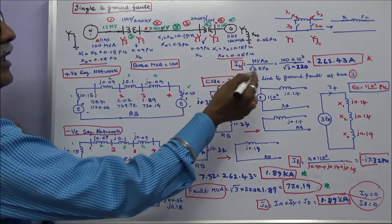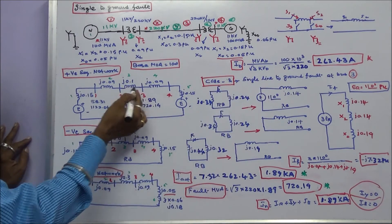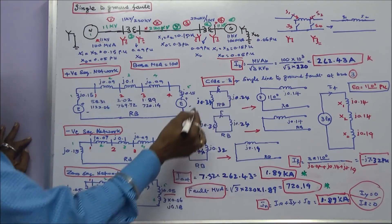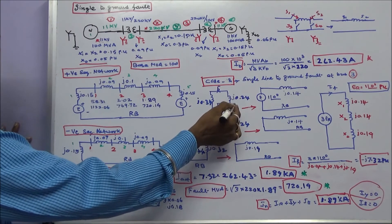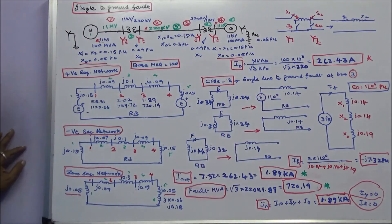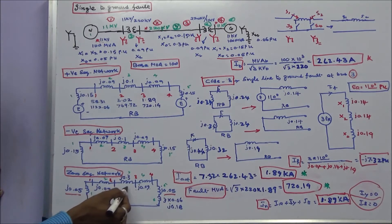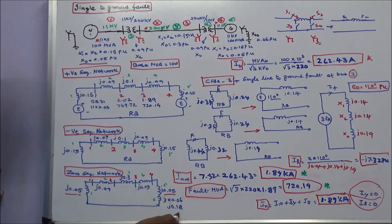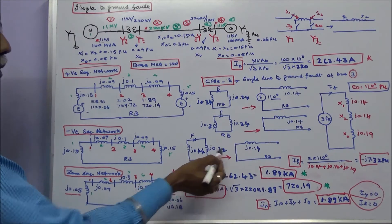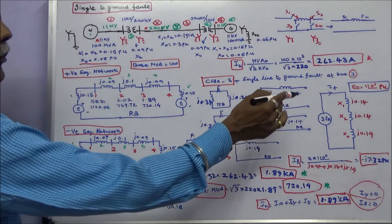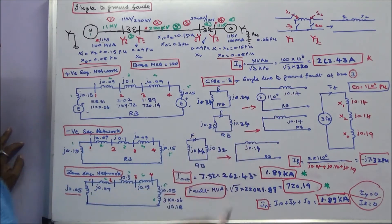Case 3: single line-to-ground fault at bus 3. One side total reactance is j0.34, other side is j0.24. These two are connected in parallel, giving X1 equals j0.14 and X2 equals j0.14. For zero sequence reactance: one path is j0.05 plus j0.1 plus j0.3, equaling j0.44. Another path is j0.09 plus j0.05 plus j0.18, equaling j0.32. These two are in parallel, giving zero sequence reactance j0.19. Positive, negative, and zero sequence reactances are now known.